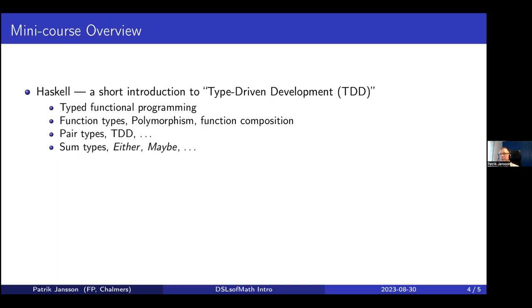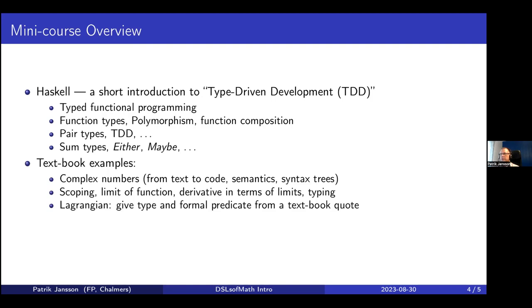We'll cover function types, polymorphism, function composition, pair types, type-driven development, and sum types. I'll also give examples where we take quotes from a mathematics textbook and analyze them very carefully — like 'the devil reads the bible' — trying to see exactly what's written and what it means, and whether we can code it up. The first example is on complex numbers.